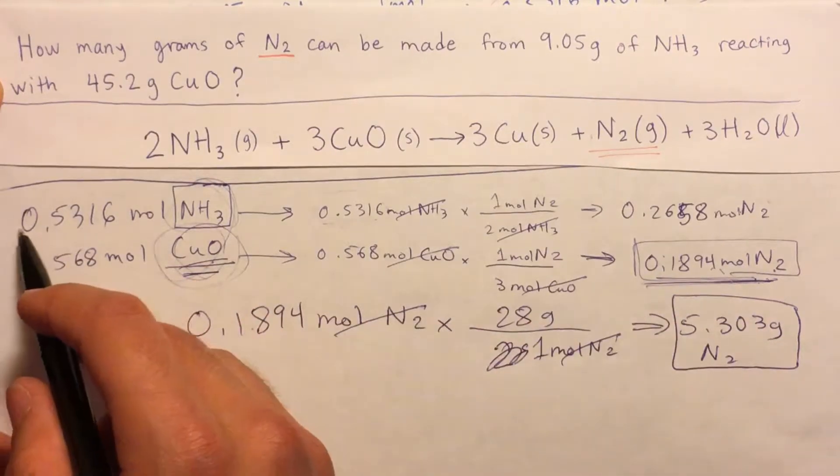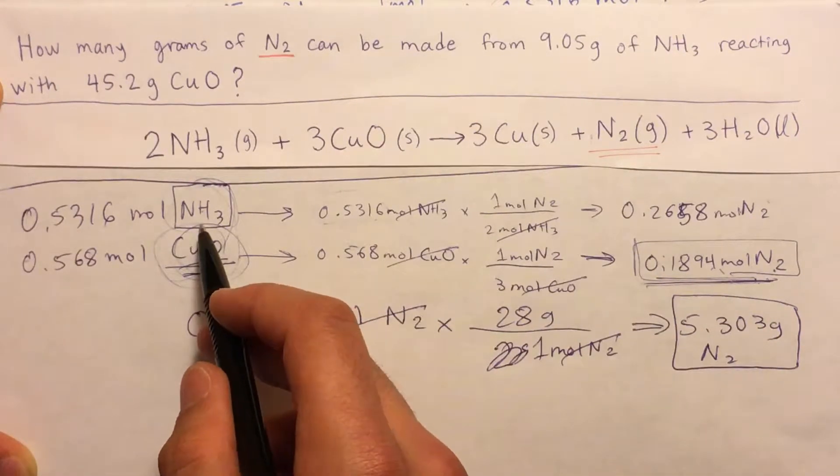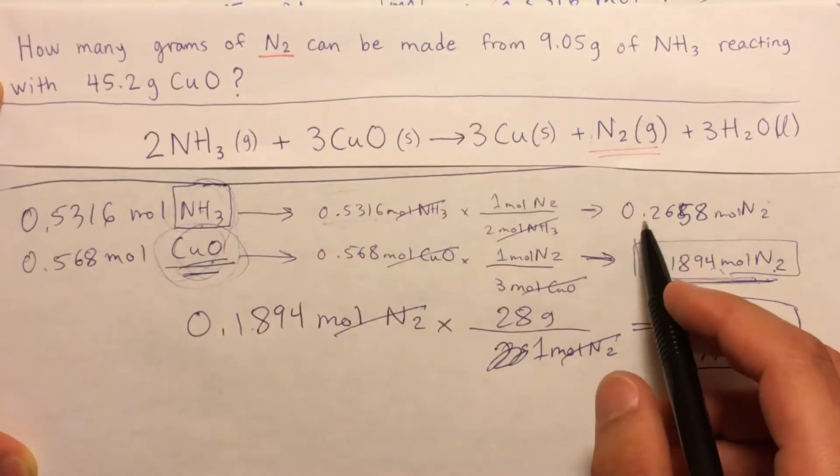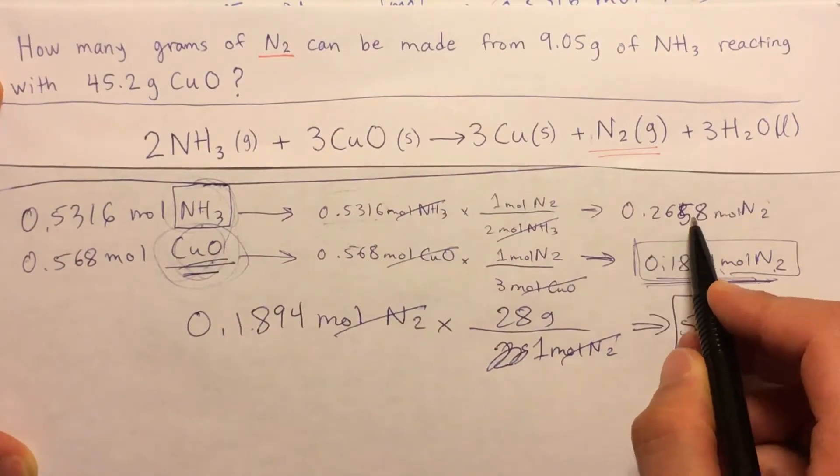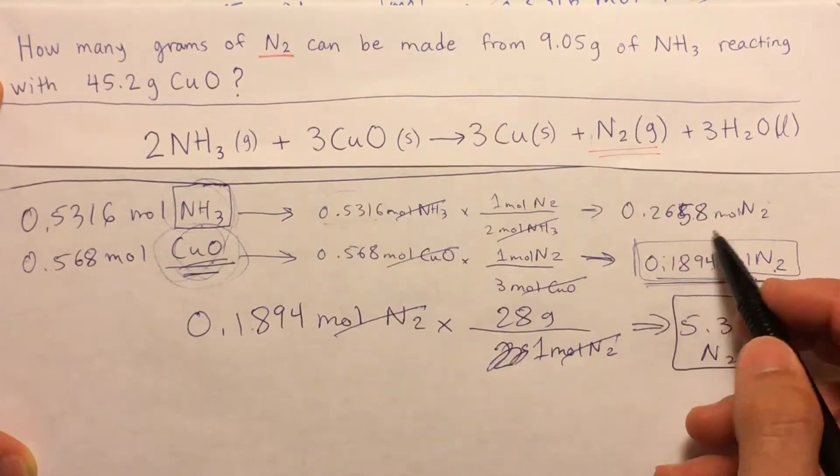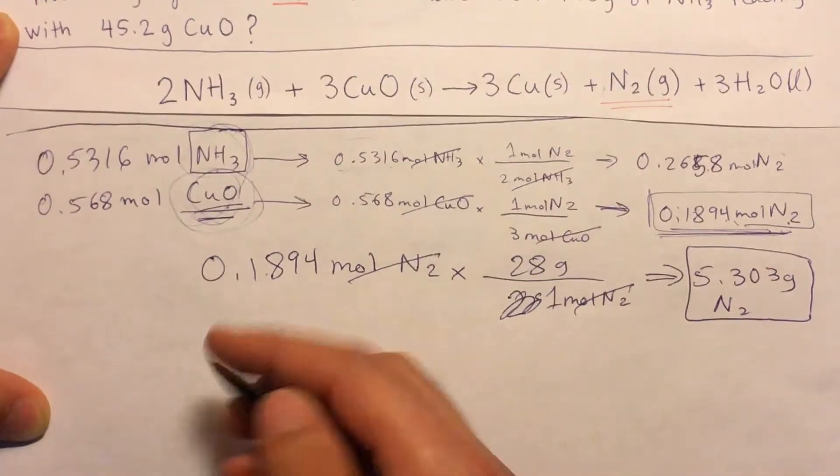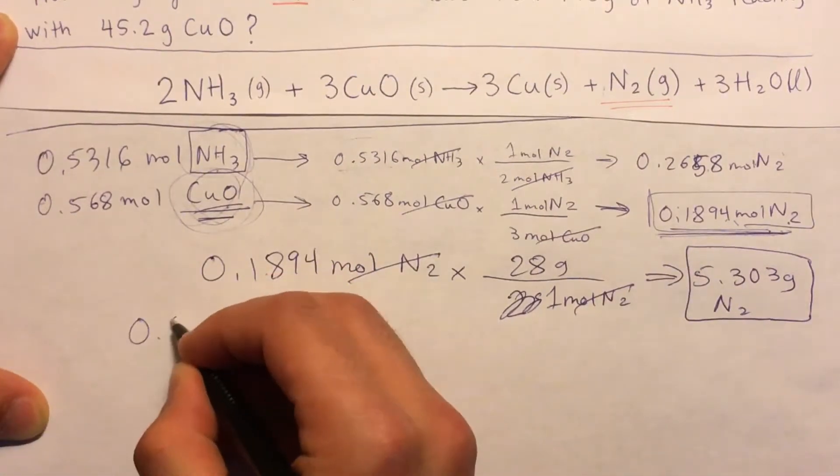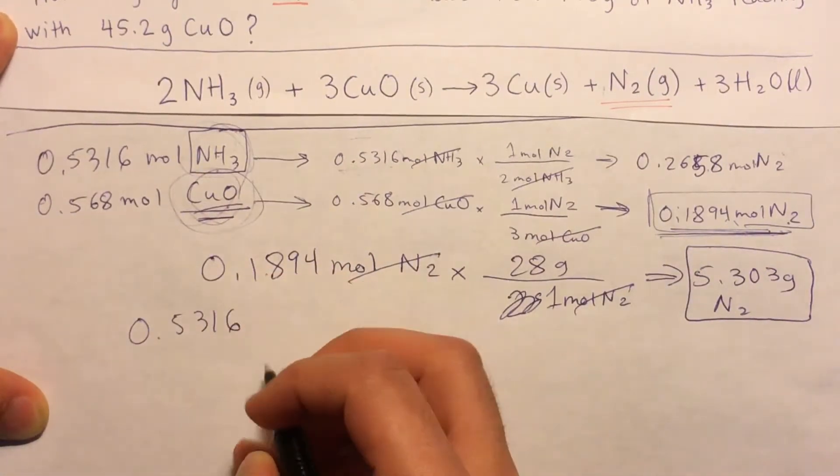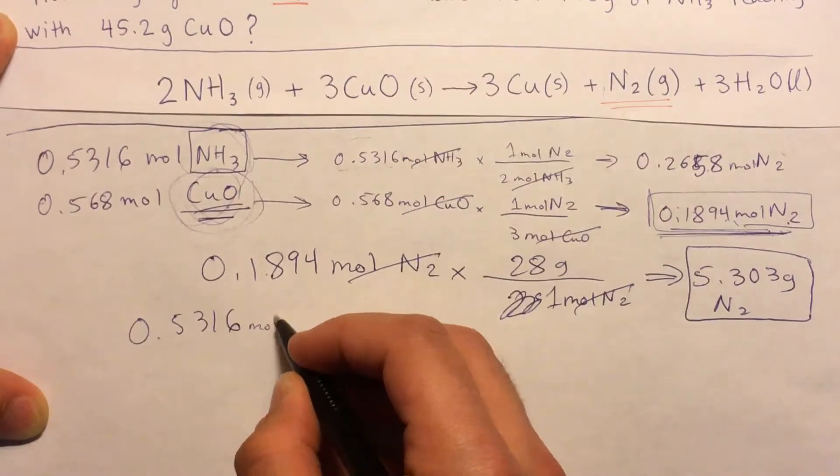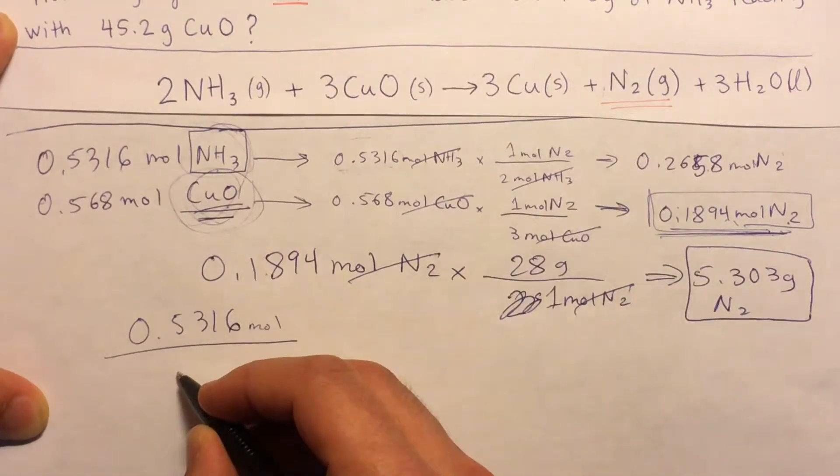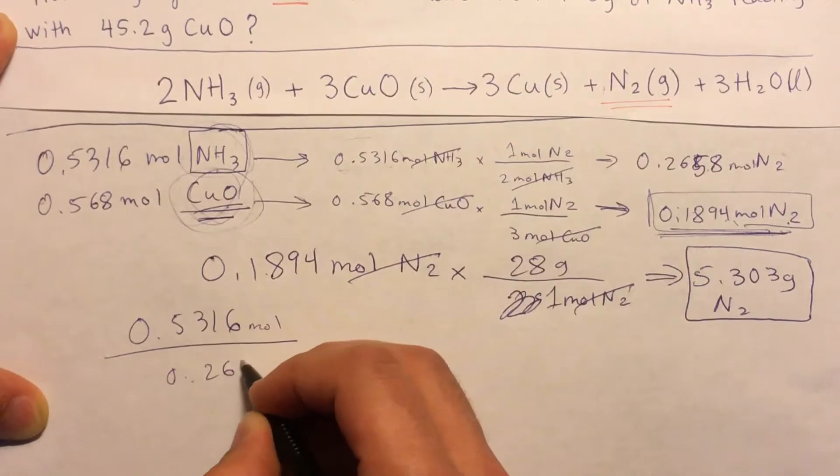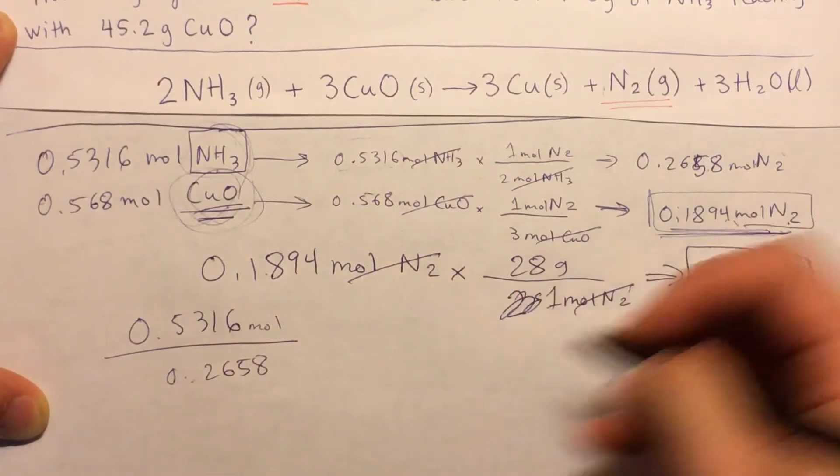So you're given 0.5316 moles of NH3, and they could produce a total of 0.2658, but you want this number to be 0.1894. So you could do a little proportion, and you have 0.5316 moles produce 0.2658. I'm just copying from right there.